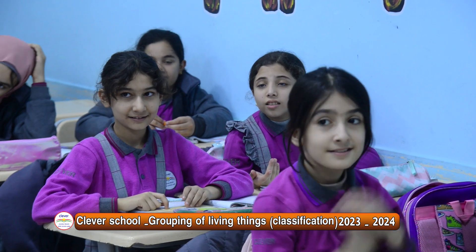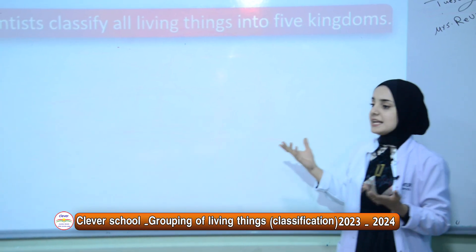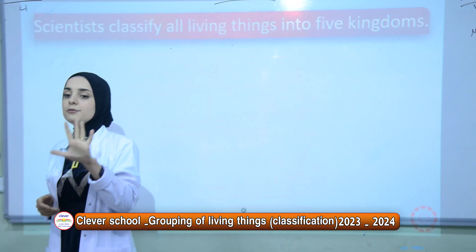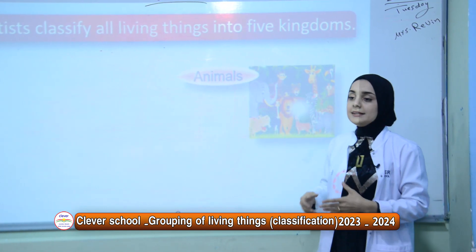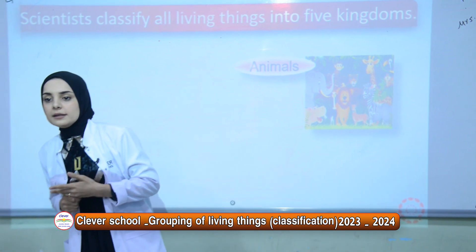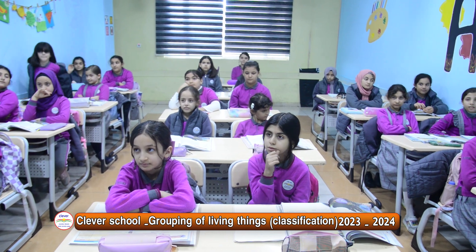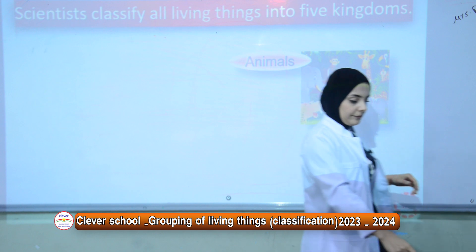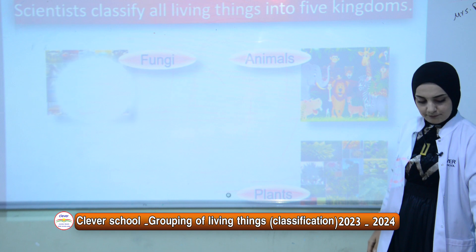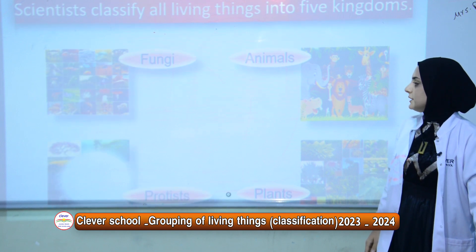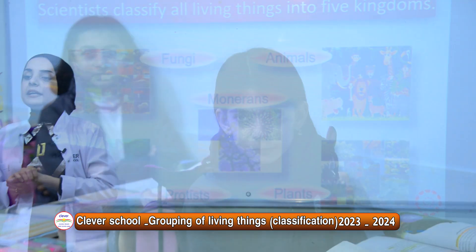Classification means grouping things by using a set of rules. Scientists classify all living things into five large groups. Number one is animals — like elephants, snakes, lions. The second one is plants. The third one is fungi. The other one is protists, and the last one is monerans. I will explain each of these kingdoms one by one.